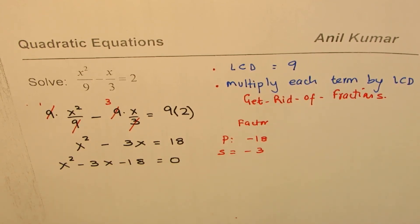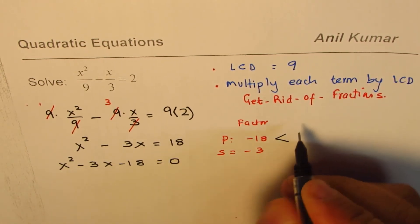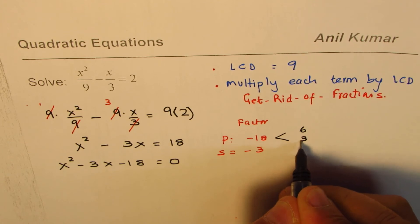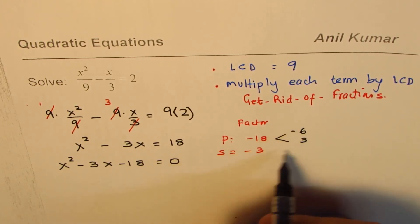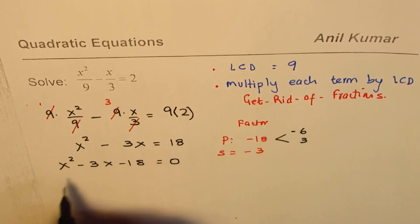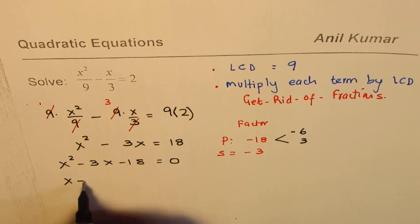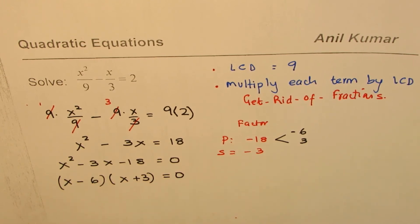So the two numbers which could give us -18 as the product and sum of -3 are 6 and 3. And one of them, which is the bigger number, should be negative. So when you add them, you get negative. So you can use these two magic terms to factor. What we get here is (x - 6)(x + 3) = 0.